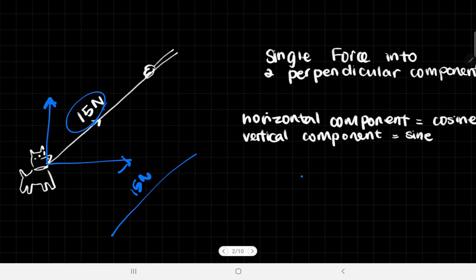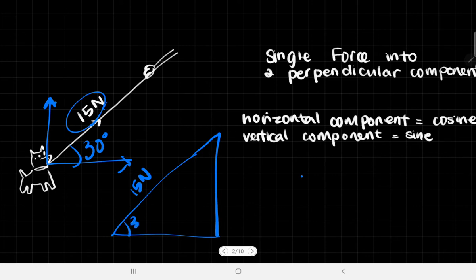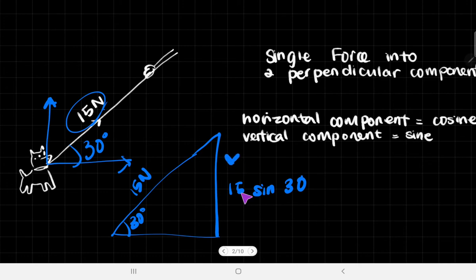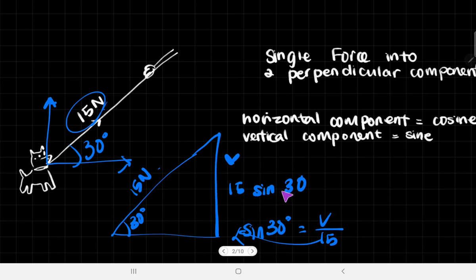You have 15 newtons and let's say it's 30 degrees to the ground. That's what the triangle is going to look like — it's very simple trigonometry. The vertical component V satisfies sine 30° = V / 15, so V = 15 sin 30. The horizontal component is going to be 15 cos 30. That's basically how you do resolving.